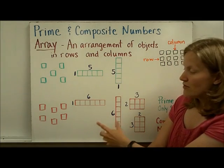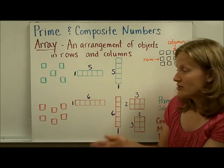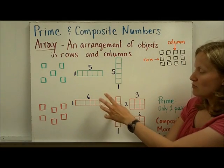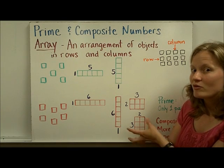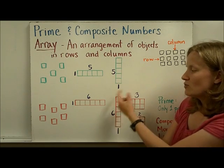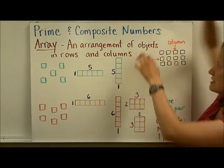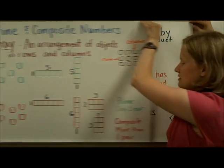For six, though, there are two different ways you can arrange six. You can put it in the one by six or the two by three. There's more than one pair, more than one way to arrange six. So we call that six a composite number. So let's go into depth in that and give the exact definitions.